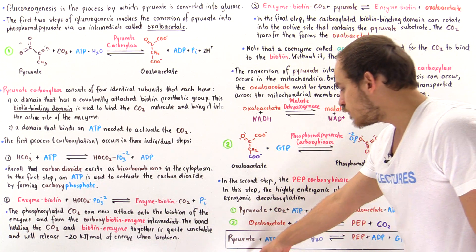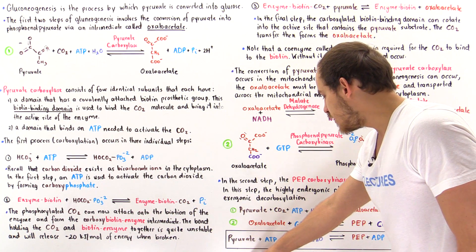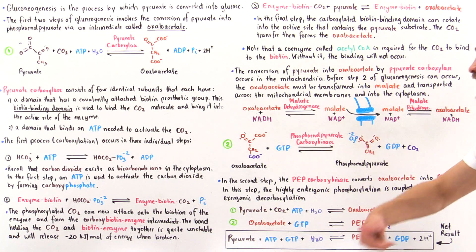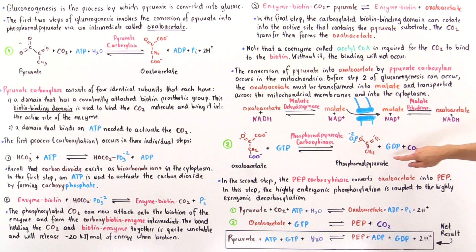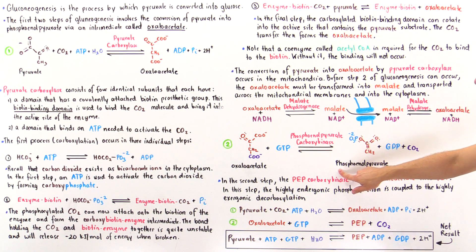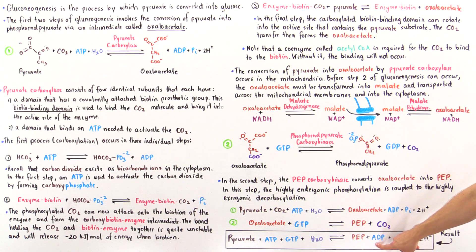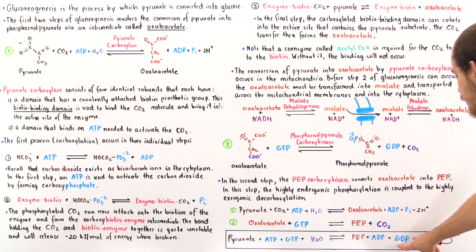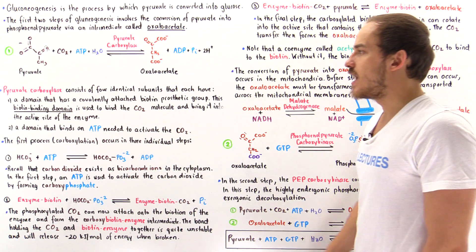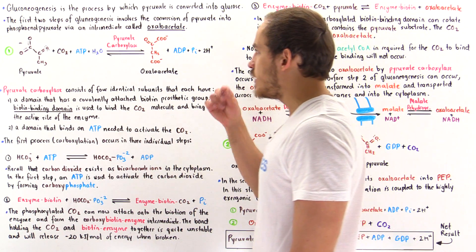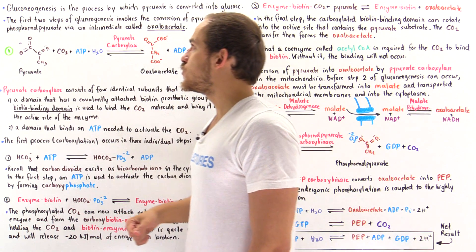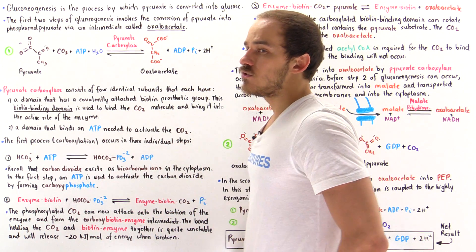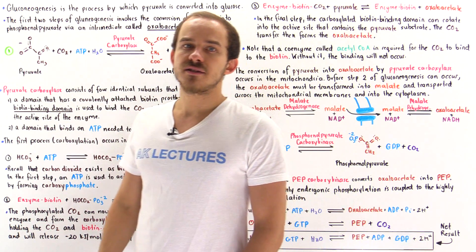Summing up these two steps, a pyruvate molecule in the presence of one ATP and one GTP and water forms phosphoenolpyruvate, ADP, GDP, and H+ ions. These are the first two steps of gluconeogenesis — a two-step bypass of the irreversible glycolysis step that converts pyruvate into phosphoenolpyruvate through an energetically favorable pathway.